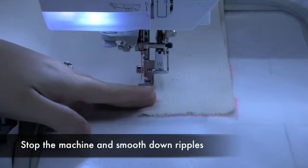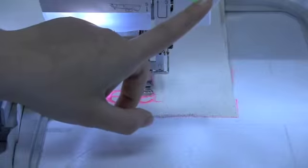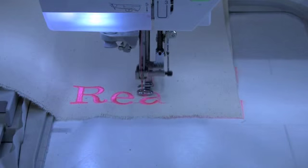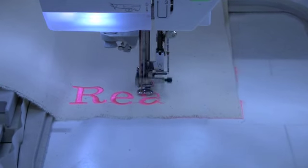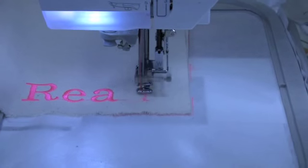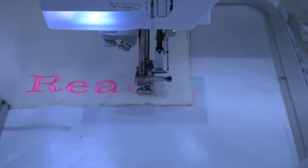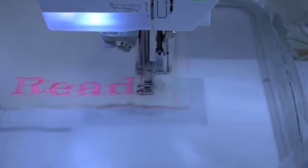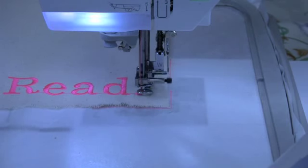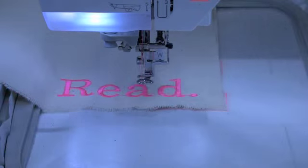If you feel like you're getting a ripple, just stop your machine and smooth down your fabric and restart it. I love the stabilizer. And our reed panel is all finished.